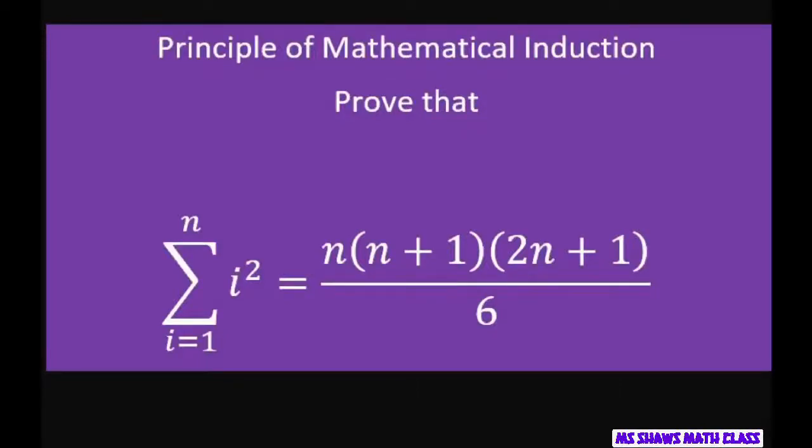Hi everyone. We're going to use the Principle of Mathematical Induction to prove that the sum of i squared from i equals 1 to n equals this right hand side here. And this is for all positive integers, for all n that belongs to the positive integers.